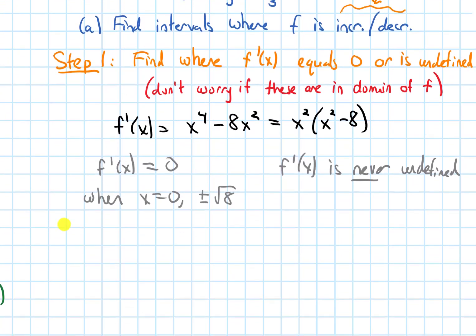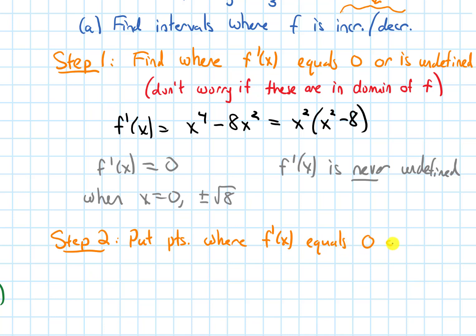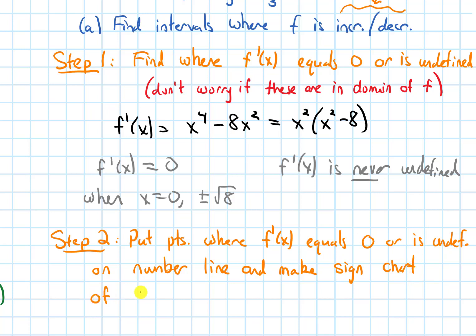So we've found the cut points of our derivative function. Step 2 is to put these on a number line — the points where the derivative equals 0 or is undefined — and make a sign chart of the derivative, because we want to know when the derivative is going to be positive and when it's going to be negative.